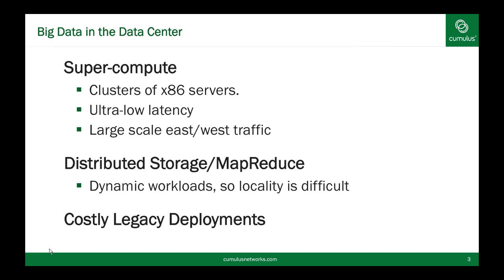Latency becomes very important as you've distributed your data across multiple servers, and this also drives up east-west bandwidth as you need to go collect the information to process across it. Traditionally, this means you have to be very focused on the locality where your job is running relative to where your data is being stored. But as we will show, you can build a very scalable, very resilient, and high-bandwidth east-west style data center on an L3 fabric with Cumulus Linux as the enabler. We will also show how traditional network vendors using an L2-centered network often come with very high costs, preventing you from leveraging higher-speed interfaces and high non-blocking bandwidth inside of your cluster.